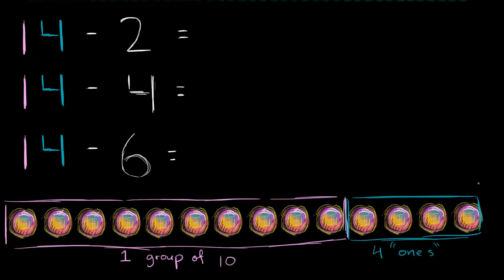Now let's look at each of these. What is 14 minus 2 going to be? Well, we could take away 2. So take away 1, take away 2. And how many are we left with? Well, we still have our 1 group of 10. So it's going to be 1, followed by how many 1's do we have left over? Well, we have 2 1's. We have 2 1's left over. 1, 2. So we are going to be left with 12.